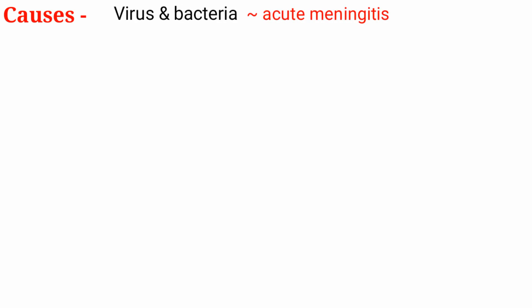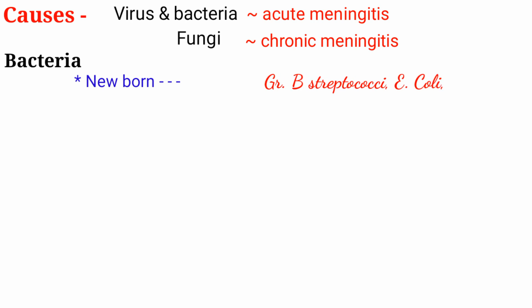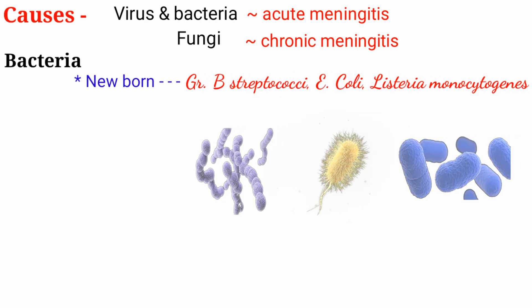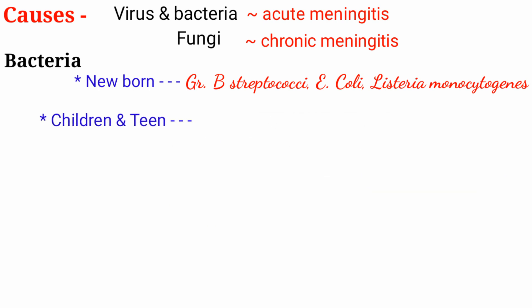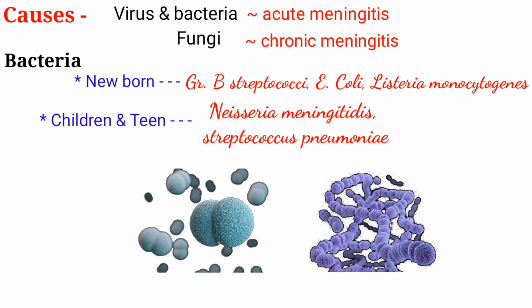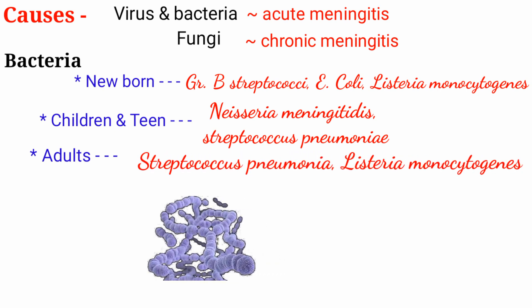When it comes to the causes of meningitis, viruses and bacteria usually cause acute meningitis, whereas fungi cause chronic meningitis. For bacteria, in newborns the most common causes are Group B Streptococci, E. coli, and Listeria monocytogenes. In children and teens, the most common causes are Neisseria meningitidis and Streptococcus pneumoniae.